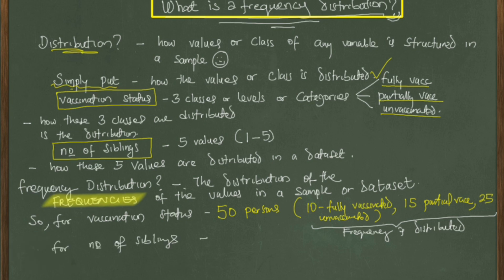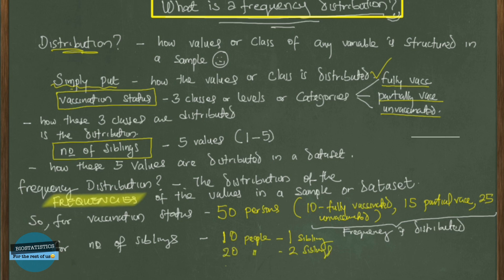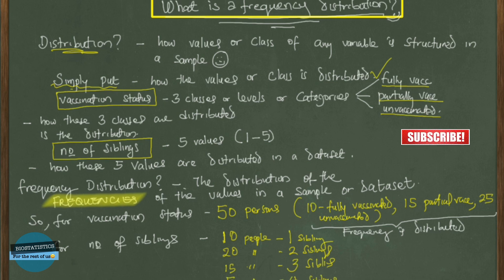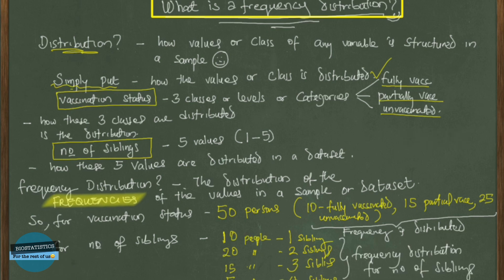The other example is the number of siblings. Because it's a numeric variable with just five values — one to five — we found that out of 50 individuals, 10 people had only one sibling, 20 people had two siblings, 15 people had three siblings, and five people had four siblings. So the frequency distribution here describes the distribution of the frequencies for the number of siblings.